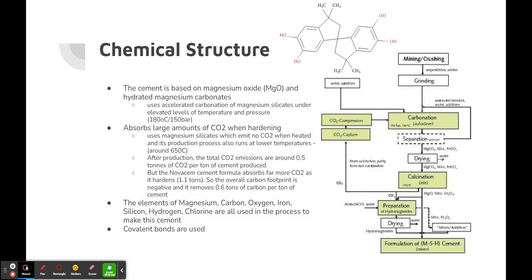So the overall carbon footprint is negative and removes 0.6 tons of carbon per ton of cement. The elements of magnesium, carbon, oxygen, iron, silicon, hydrogen, and chlorine are all used in the process to make the cement, and covalent bonds are used.